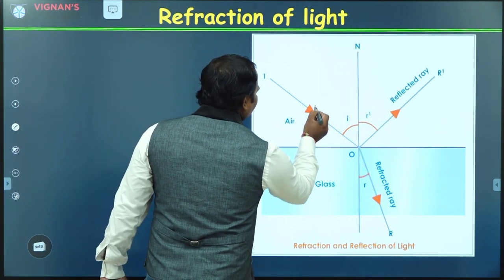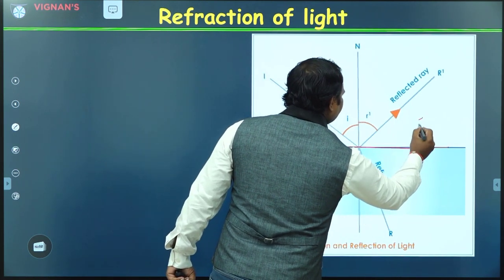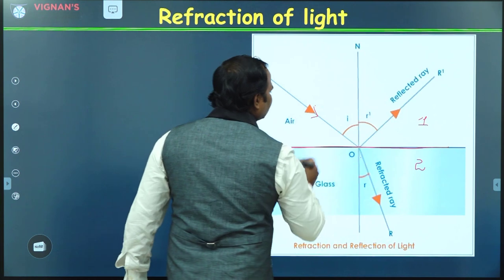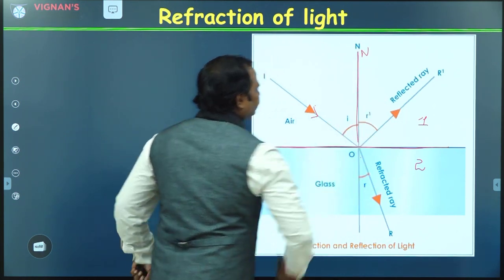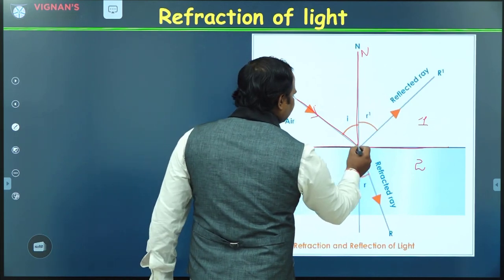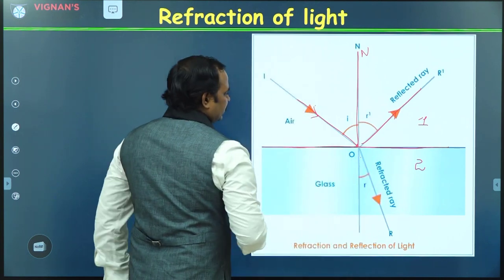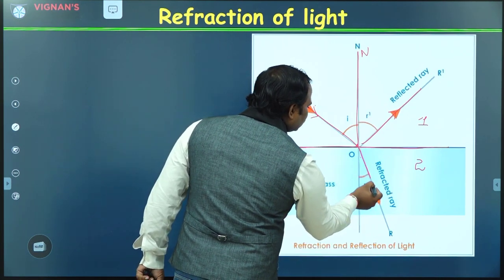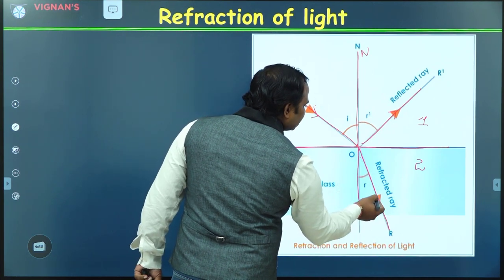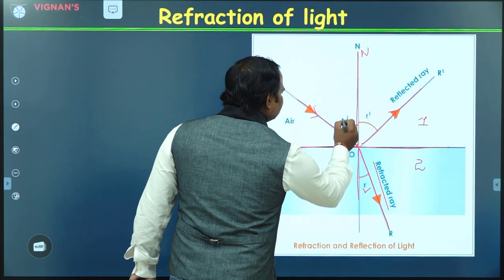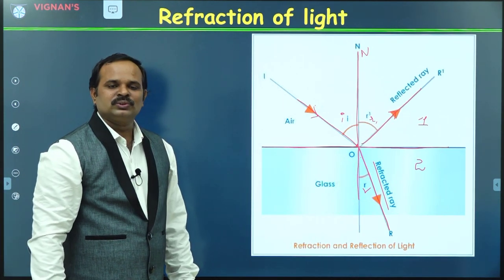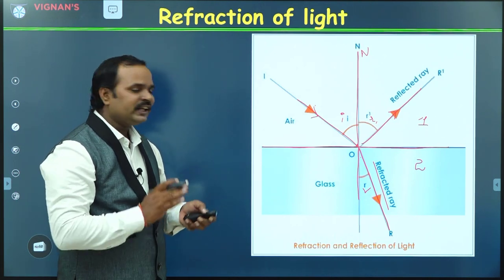This is the refraction of light. Here we have an interface with one medium and another medium. A light ray is incident from one medium to another medium. This is the normal to the surface. When a light ray is incident, a part of the radiation reflects back into space, and a part is transmitted through the second medium. The angle between the normal and the transmitted radiation is called the angle of refraction, and this is the angle of incidence and the angle of reflection.